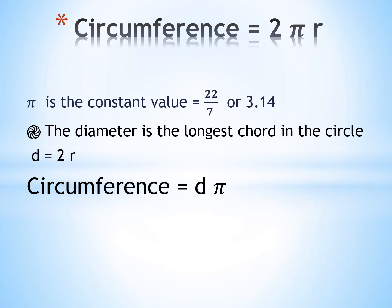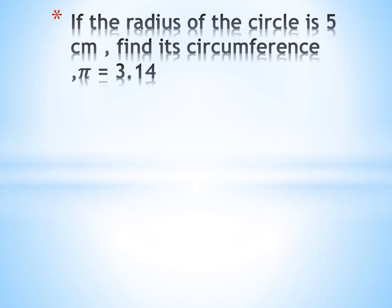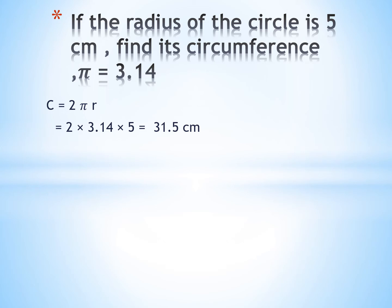Now I have an example about the circle. If the radius of the circle is 5 cm, find its circumference, and π equals 3.14. I have the radius length, so I use the rule with radius. Circumference equals 2πr, equal 2 times 3.14 times 5, equal 31.4 cm.